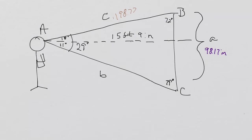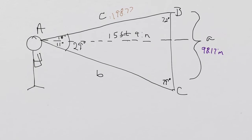So c is 198.77. So now what's left is we have to calculate b, and to calculate b we're going to use Law of Cosines.